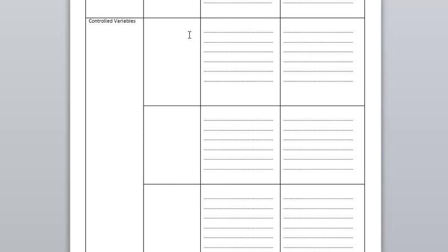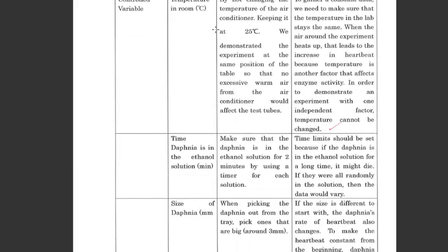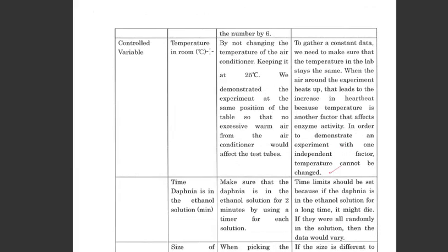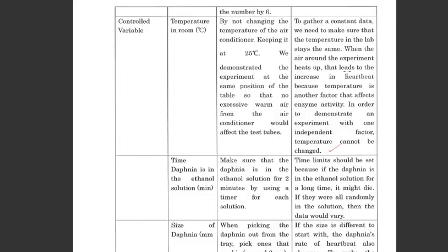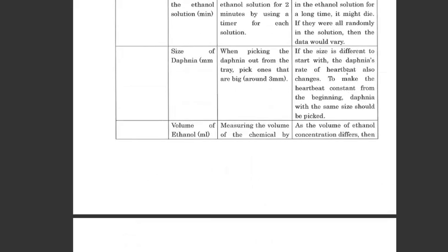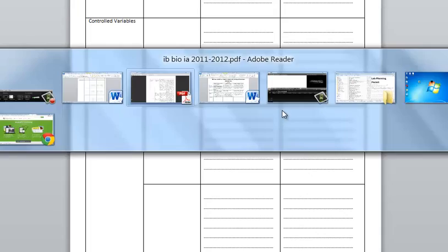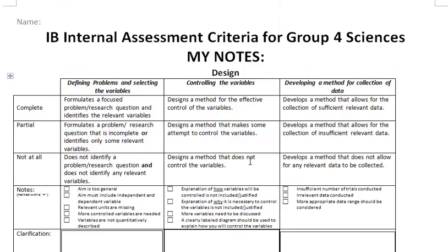And this is most important for each of the controlled variables. You can see in this example over here. For each of the controlled variables, make sure you list it. Give the actual unit. And then talk about how you are going to keep that controlled and why it's necessary to keep that controlled. So you can see in this Daphnia experiment, there are several. You should be aiming for at least five controlled variables, I think, to be safe. Don't forget the units, of course, as well.